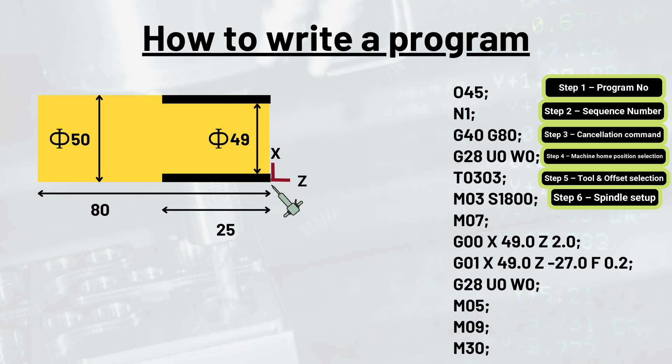As soon as spindle setup is done, machine has started operating and hence coolant is required. So in this step, we are going to do the setup for coolant. We will switch on the coolant using command M07.